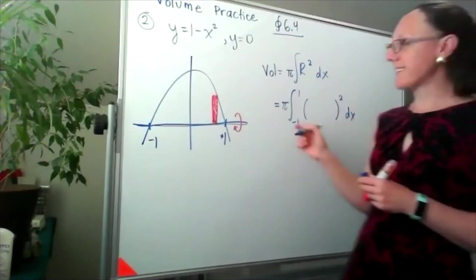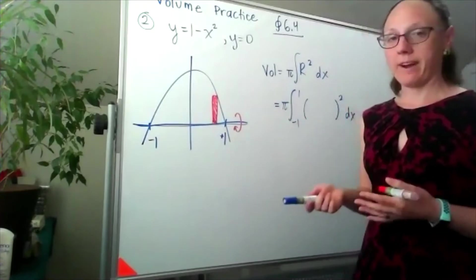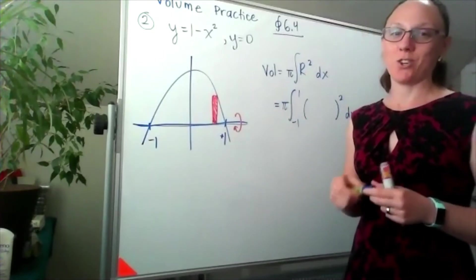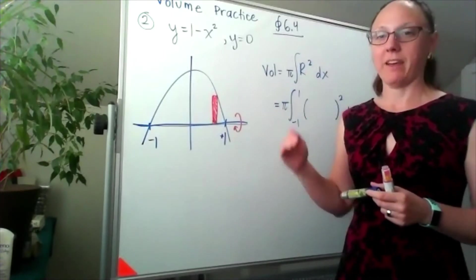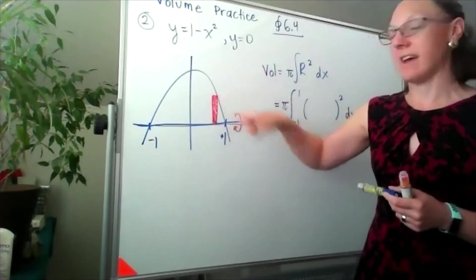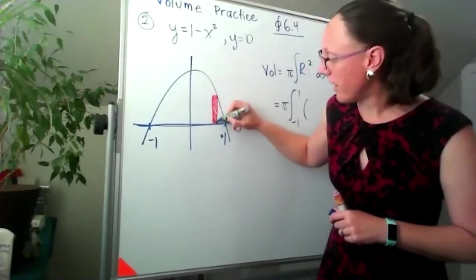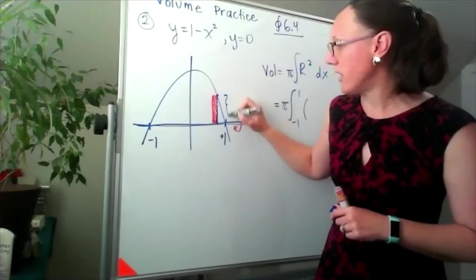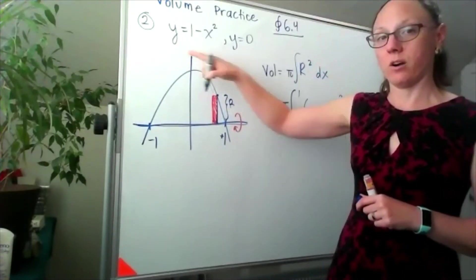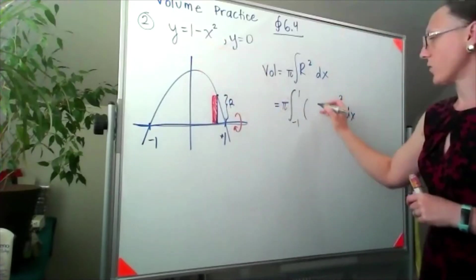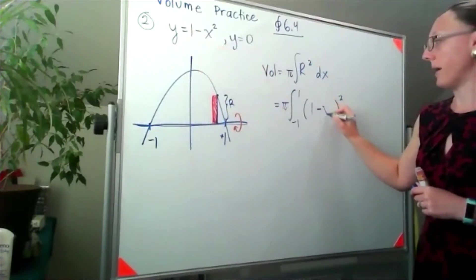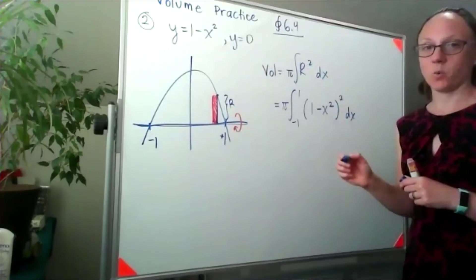And in this case, our radius, well always, our radius starts at the axis of rotation and goes until we hit the edge of our cross section. So if I start at the axis of rotation and I go until I hit this edge, then that radius is my height or my y value. So I'll be plugging in the 1 minus x squared.